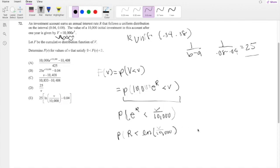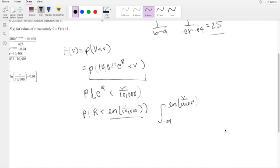So putting that into our formula for distribution of R, the lower bound is 0.04. The upper bound here is natural log of V over 10,000. And our function here is going to be just 25 dR. So then because it's just a constant, this becomes 25R, where R is going from 0.04 to the upper limit, natural log of V over 10,000.